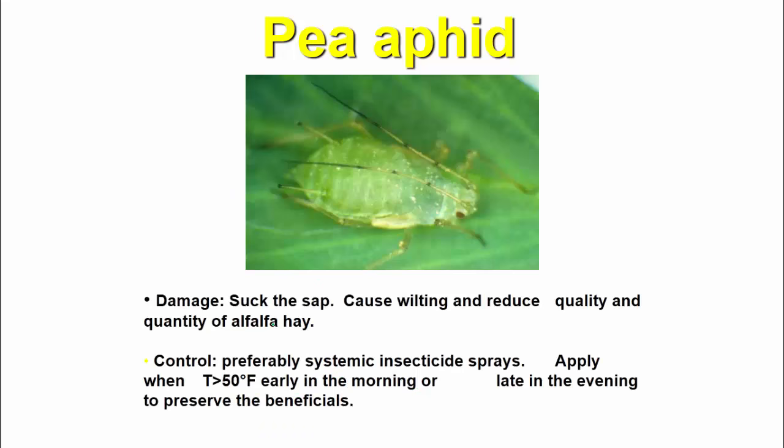The pea aphid sucks the sap, causing wilting and reducing both quality and quantity of the alfalfa. For control, preferably use systemic insecticides. Apply when temperature is greater than 50°F, early in the morning or late in the evening to avoid harming beneficial insects.